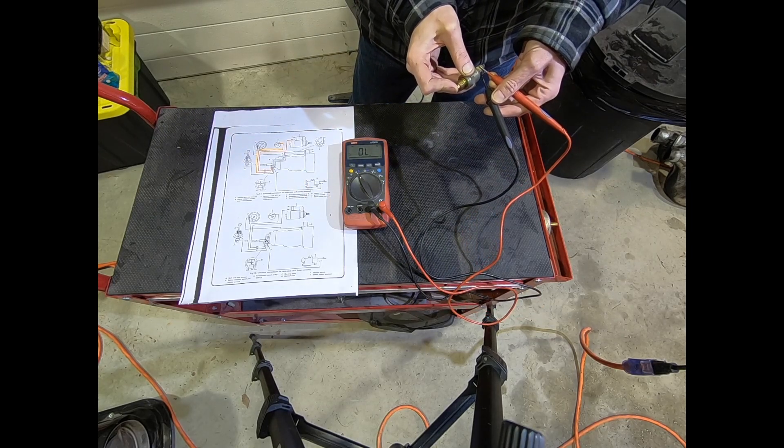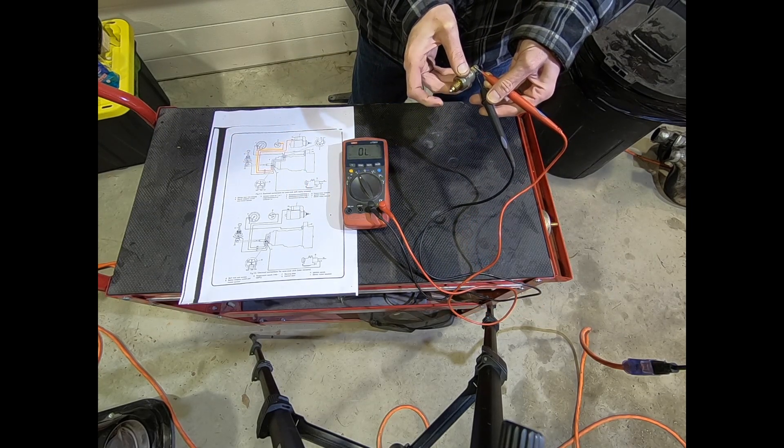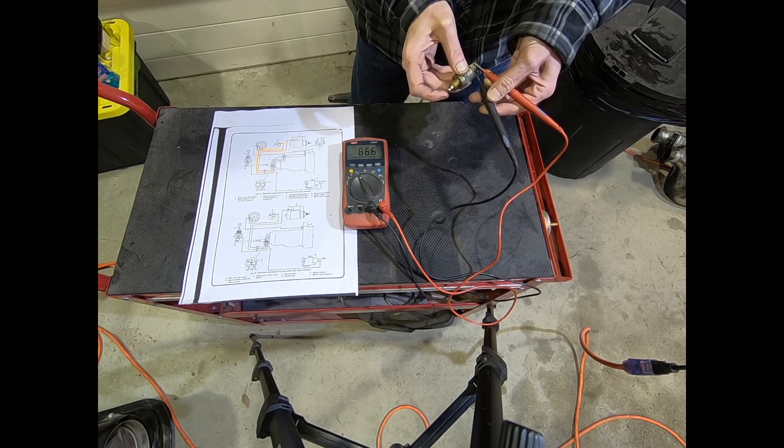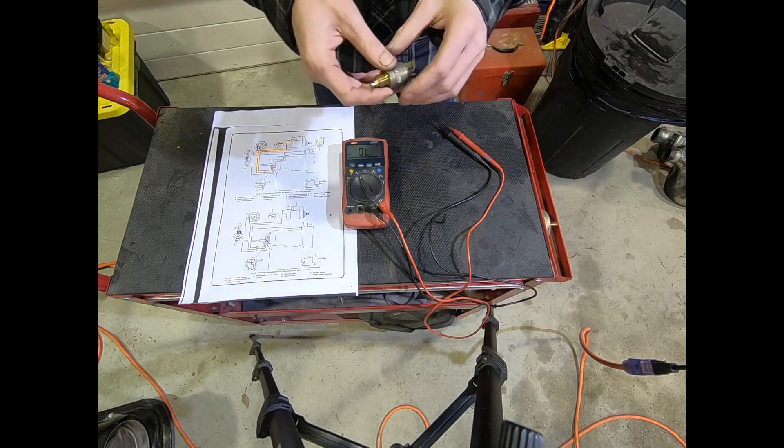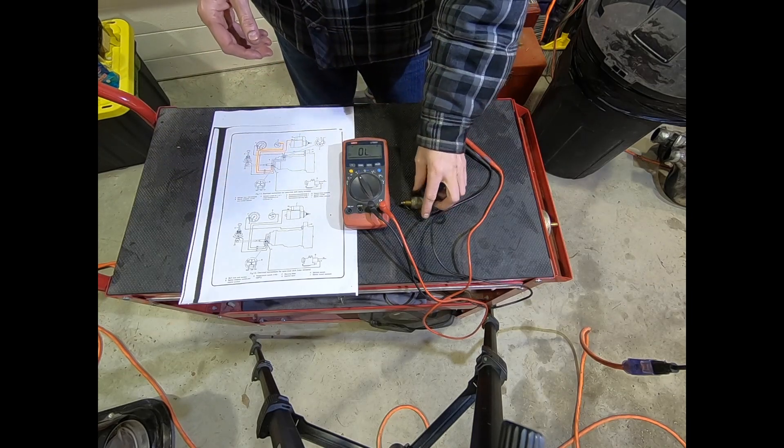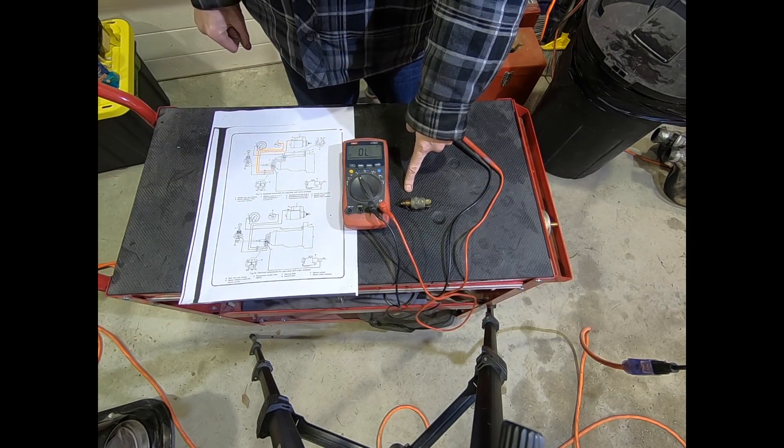So multimeter is saying overload, zero, and saying we have continuity. So simple, simple test. This neutral safety switch is also in working order.